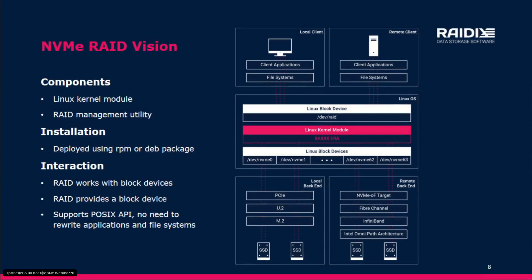Before starting development, the first question was where to implement RAID — in user space or in kernel space. The main user space advantage is great performance, but it has disadvantages: no local block device and no POSIX API, meaning you need to rewrite applications and file systems. The main kernel space advantage is the block device and compatibility with applications and file systems. So we chose the kernel driver, mainly because of POSIX compatibility.